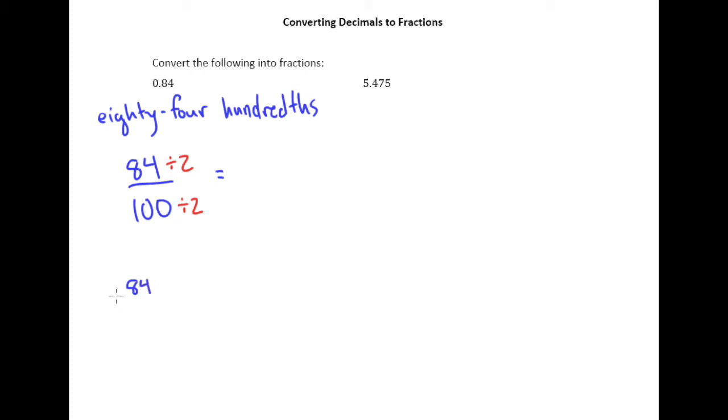And 84 divided by 2, you might do a little bit of long division over on the side here. You end up with 42 of course. So we have 42 on top and 50 on bottom, but these are both even still so I'm going to divide by 2 one more time. And we know that 50 divided by 2 is 25, and then 42 divided by 2 is going to give us 21.